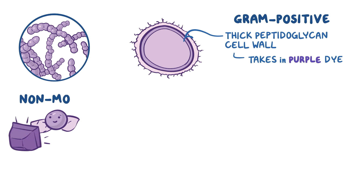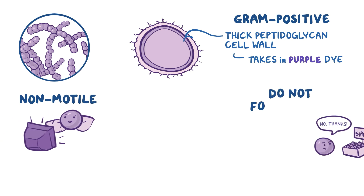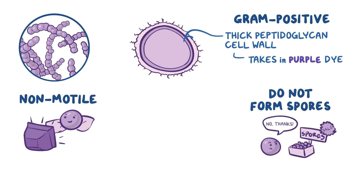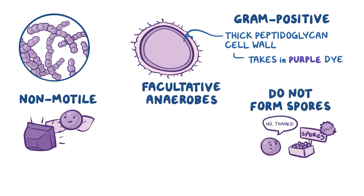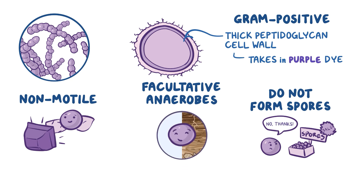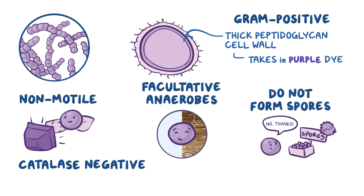They're non-motile and don't form spores, and also, they're facultative anaerobes, meaning they can survive in both aerobic and anaerobic environments. Finally, they're catalase-negative, which means they don't produce an enzyme called catalase.